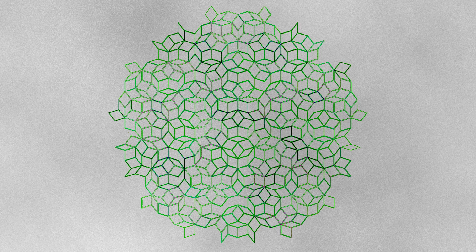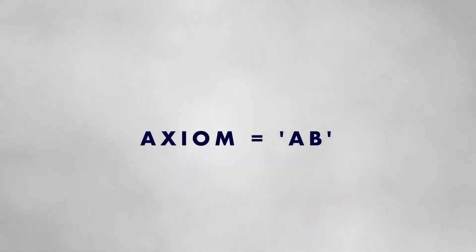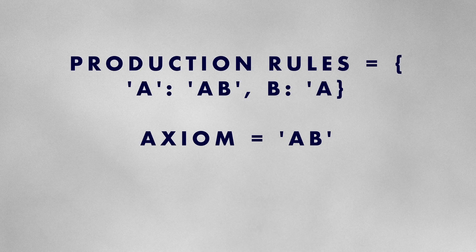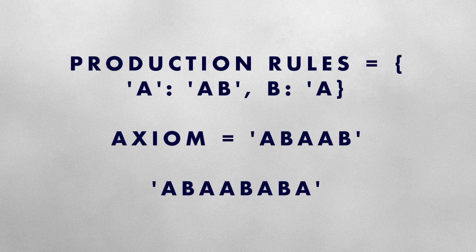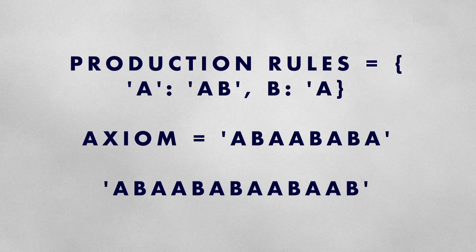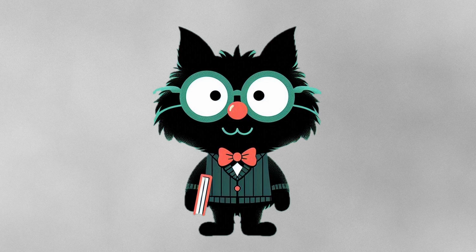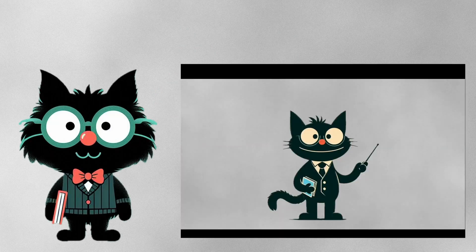Recall that an L system starts with an initial sequence of symbols called an axiom. We apply production rules that define how our symbols should be rewritten. Once transformed, we take that new sequence and apply the rules again. We can generate potentially complex and interesting patterns by iteratively reapplying these production rules to each new transformed sequence. If you'd like a more detailed explanation of L systems and their implementation in Python, I encourage you to check out my previous video.